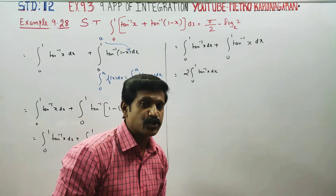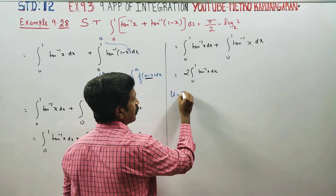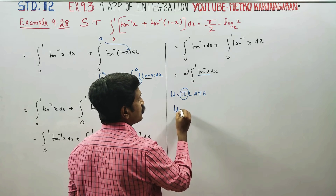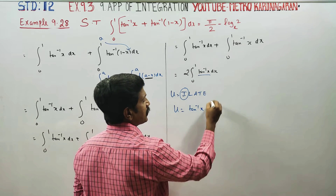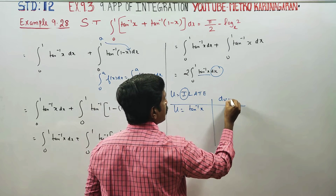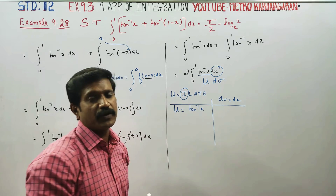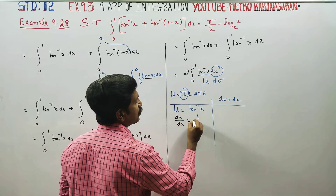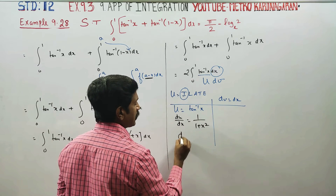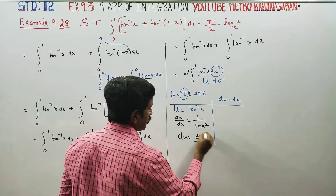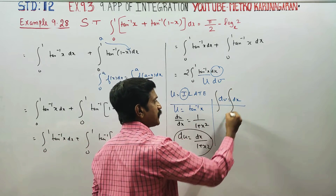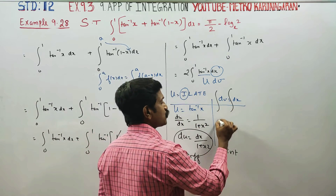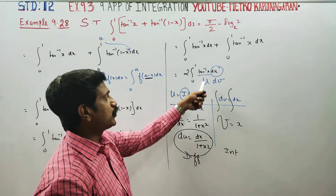Now, integration by parts — the u dv formula. What is my u? u is chosen by the ILATE rule — inverse function comes first. So u is equal to tan inverse of x. This is the inverse function. dv is equal to dx. I'm using the u dv formula, which is integration by parts. Differentiating: du/dx of tan inverse is 1/(1 + x²), so du equals dx/(1 + x²). Integration of dv is v, so v equals x.